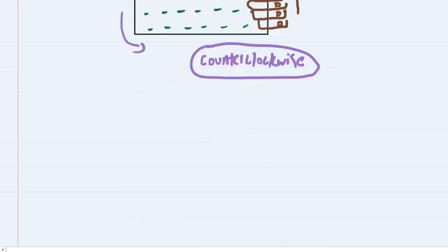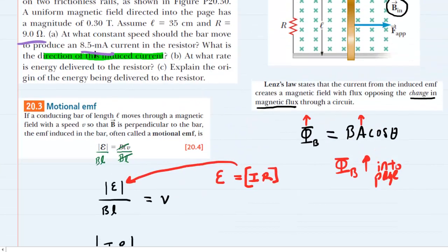We can now head over to part B of the question. And that asks us to determine the rate that energy is delivered to the resistor. Let's remember that the rate at which energy is delivered is another phrase for power. And we remember that power is equal to current squared multiplied by resistance.